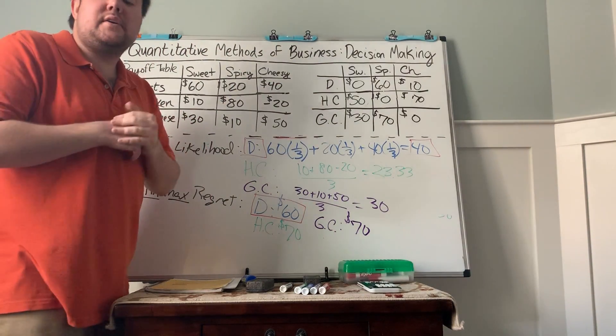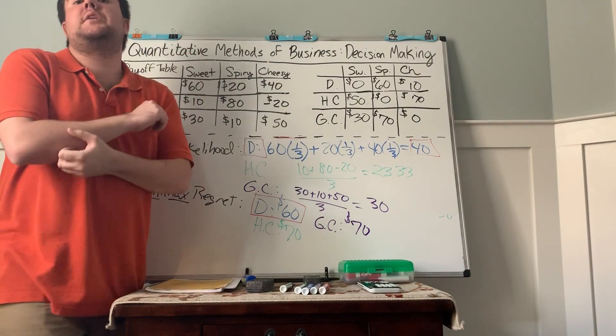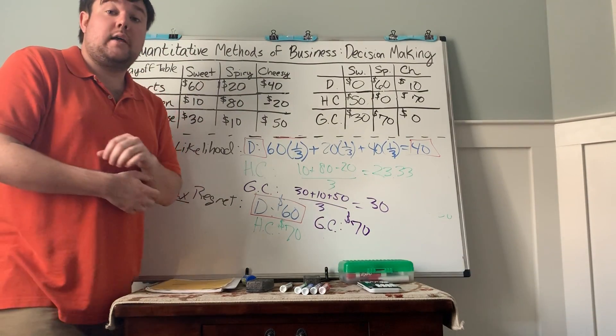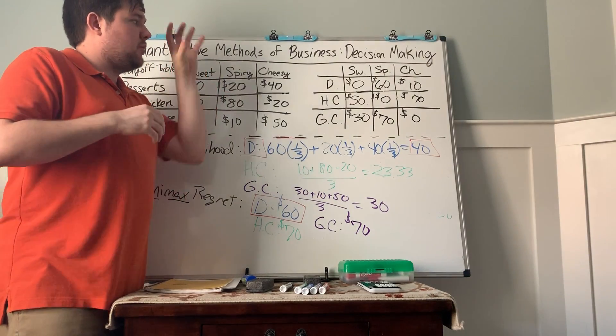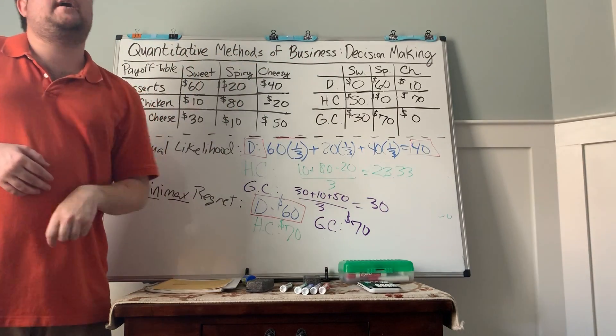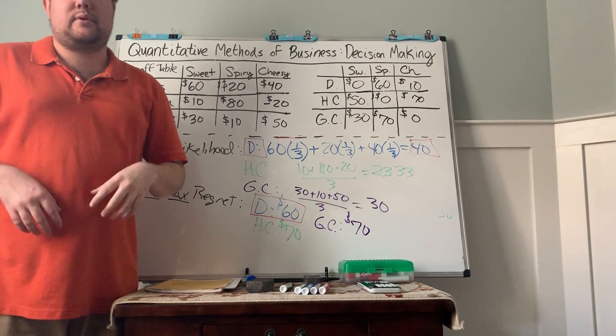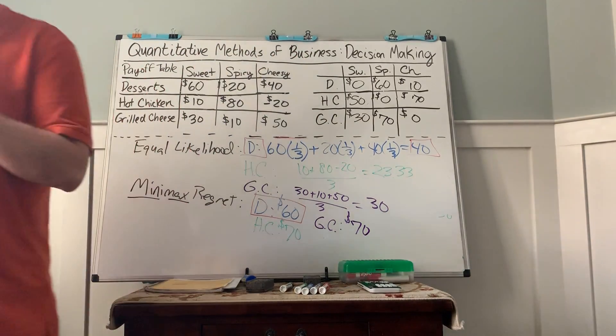And there we go. There are the five criterion to look at if you do not have the probabilities. And then catch me in a second to look at what happens when we do have more information, when we know the likelihood of those three states of nature occurring.